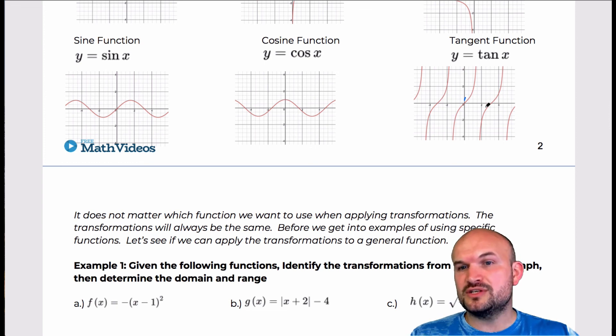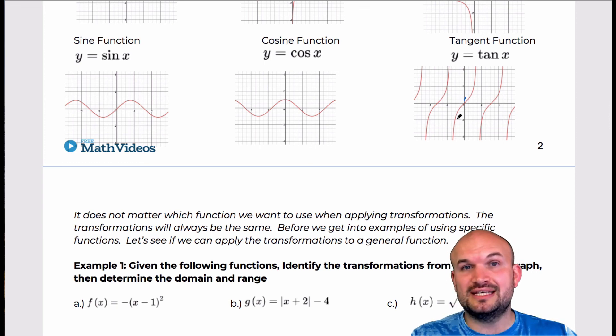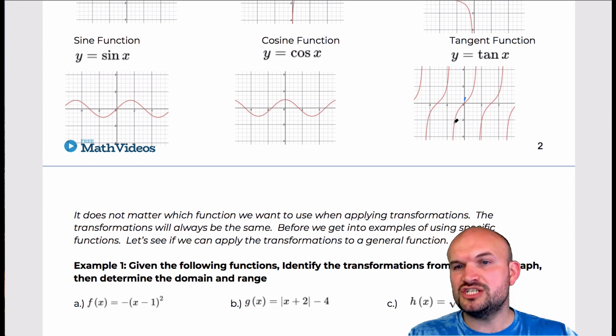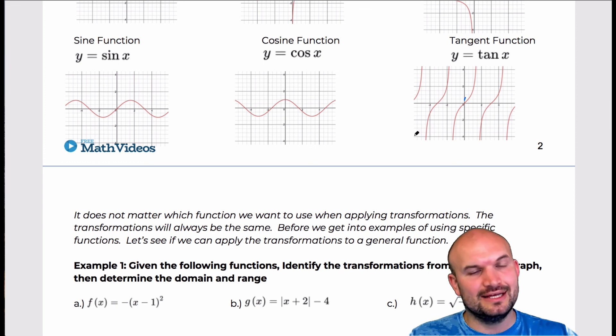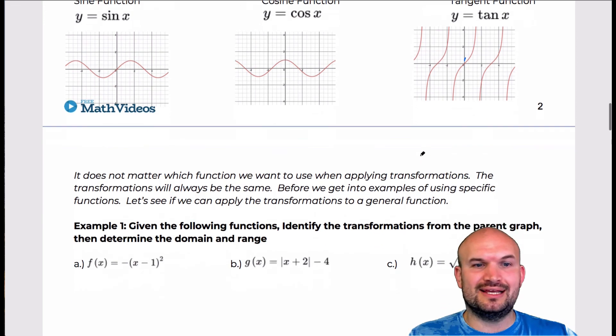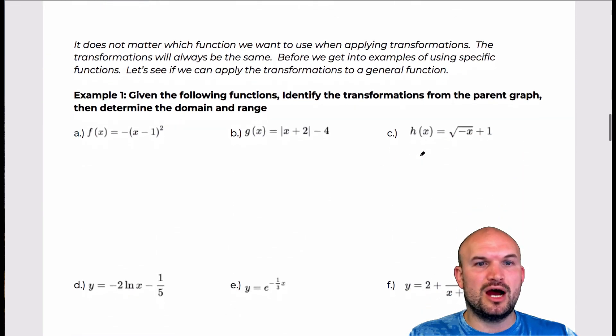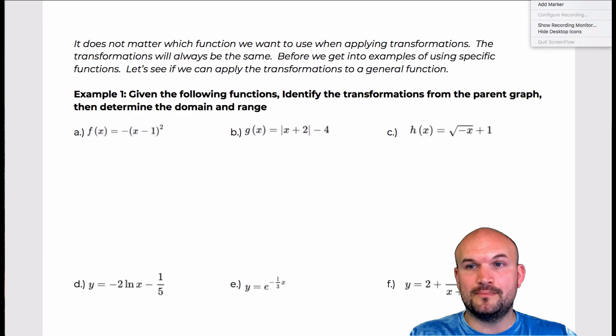The tangent function's domain is all real numbers except for those undefined values we'll discuss later. This graph has symmetry across the origin, so it is odd. Now we'll go ahead and get into example number one.